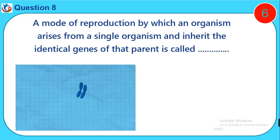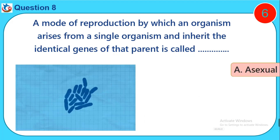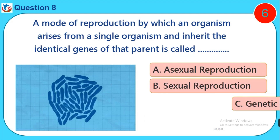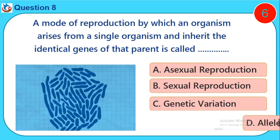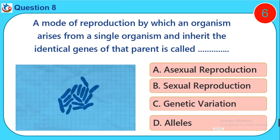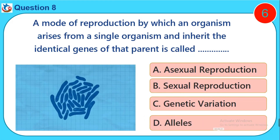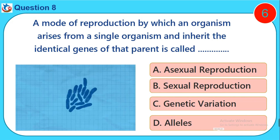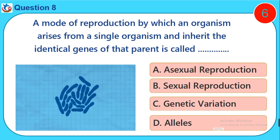Question eight: A mode of reproduction by which an organism arises from a single organism and inherits the identical genes of that parent is called dash. A) Asexual reproduction, B) Sexual reproduction, C) Genetic variation, D) Alleles.